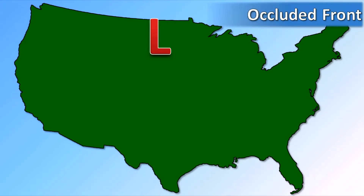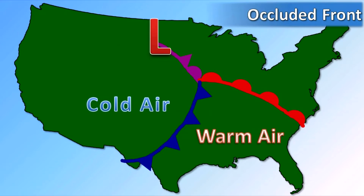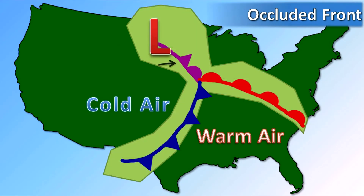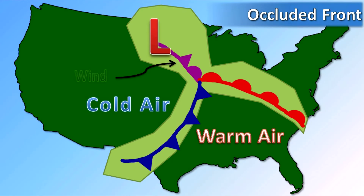Finally, we're talking about an occluded front. This happens when a fast-moving cold front catches up to its much slower counterpart, a warm front. Occluded fronts are indicated on a weather map as a purple line with alternating triangles and semicircles that point in the direction the front is moving. This front indicates that a storm system — which is what we call a low pressure and its associated fronts — has reached maturity and is beginning to fall apart. Occluded fronts produce all types of weather since they exhibit the traits of both cold and warm fronts.